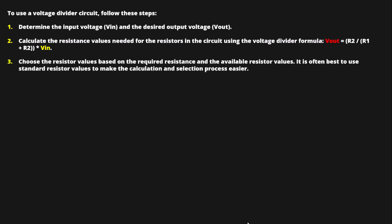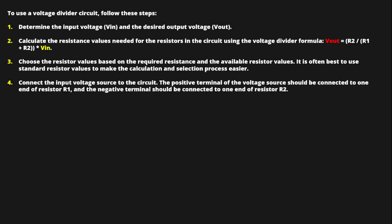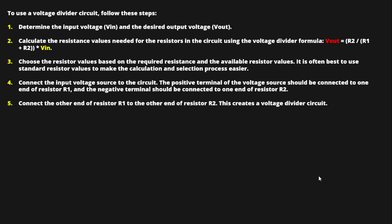Choose resistor values based on the required resistance and available resistor values. It is often best to use standard resistor values to make the calculation and selection process easier. Connect the input voltage source to the circuit: the positive terminal of the voltage source should be connected to one end of R1, and the negative terminal to the other end of R2. Connect the other end of R1 to the other end of R2 — this creates the voltage divider circuit.